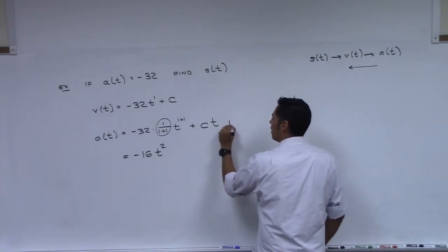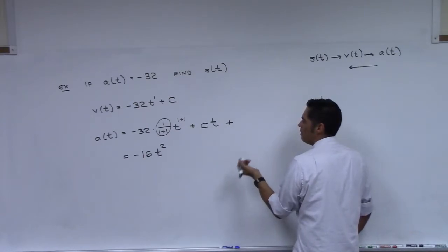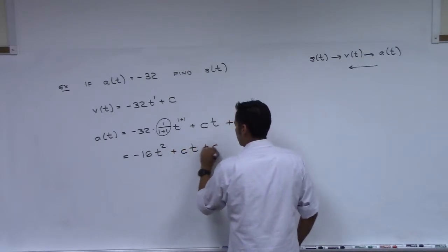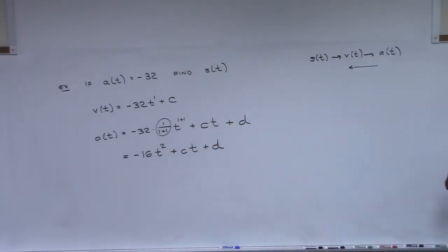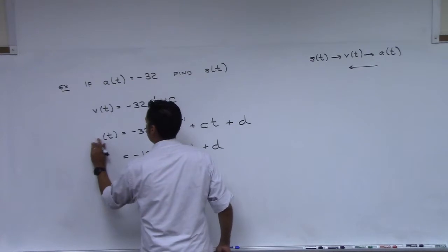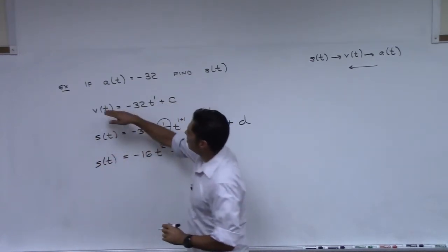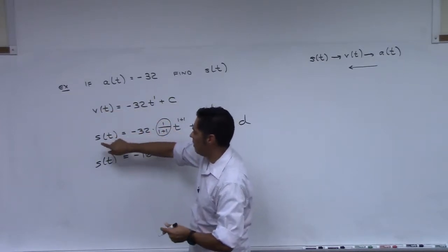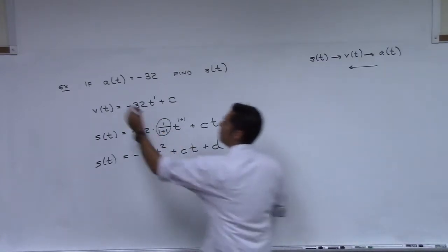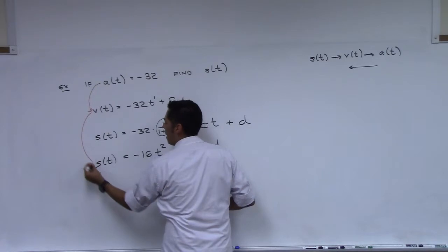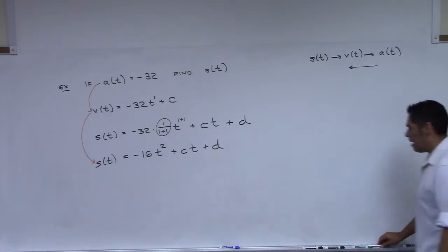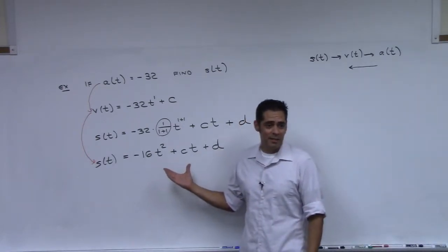Yeah, I need to add a constant here. I forgot to do it. Plus, now I can't use c because I already used c. So let's use d. So we have plus ct plus d. So have I found... This is s of t. Sorry about that. We went to v of t. We did the antiderivative to get to s of t. I put a of t. Please change that. So we started at a of t, we came back got the velocity, and then went back again and got the position function. So have we answered the question? Yes.